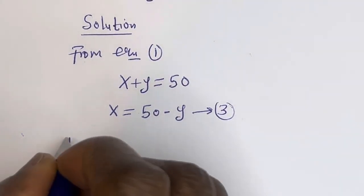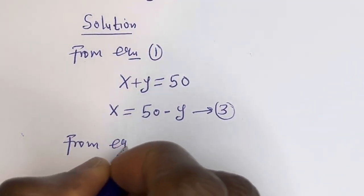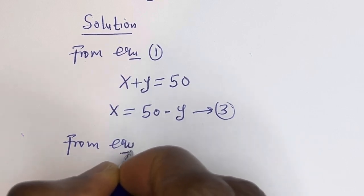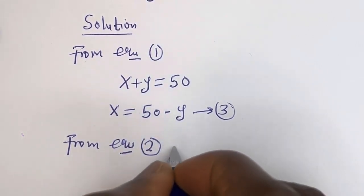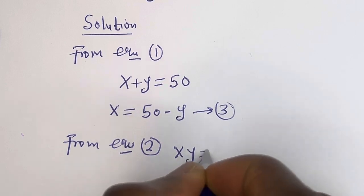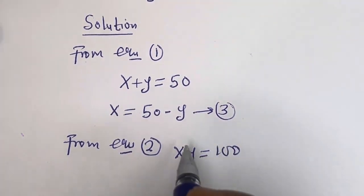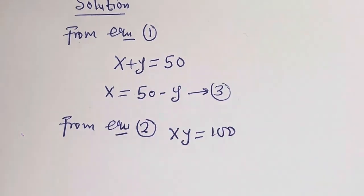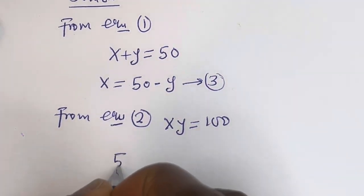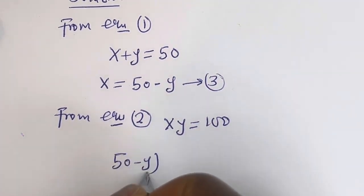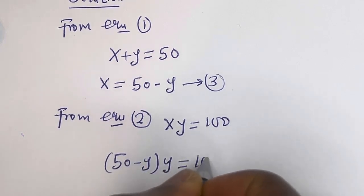From equation 2, xy is equal to 100. Now let's substitute for x. We have (50 minus y) times y is equal to 100.